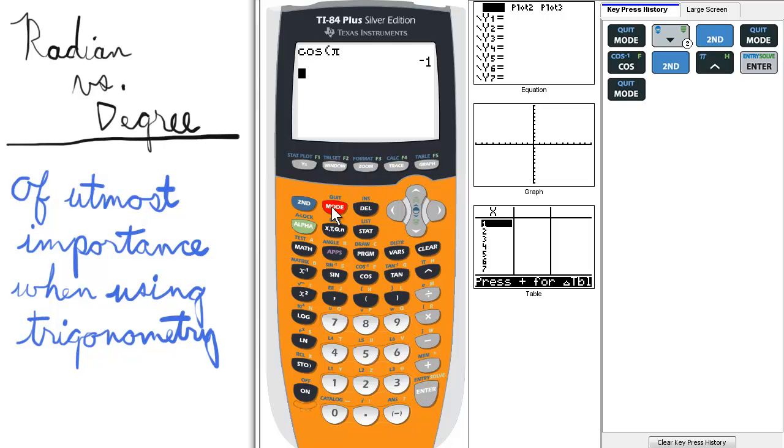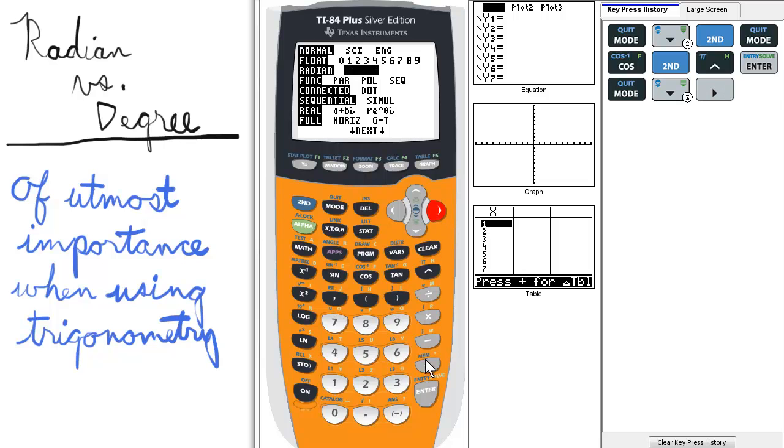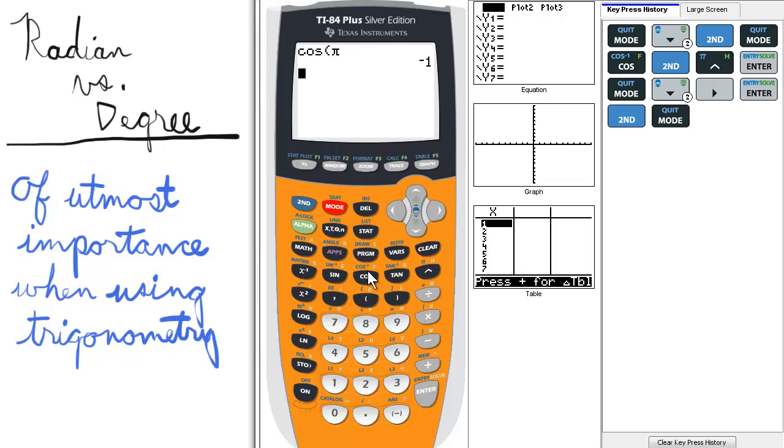Now, we can go to mode, and select degrees, and quit to go to the home screen, and we'll do the same calculation. Calculate the cosine of pi, this time in radians. Notice it's not the same number.